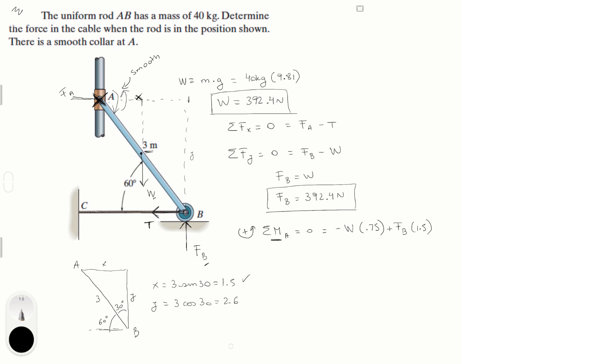And the last one is the tension right here which is trying to turn this arm which has a length of Y, T times 2.6. Why is it negative? Because it's trying to turn it clockwise.